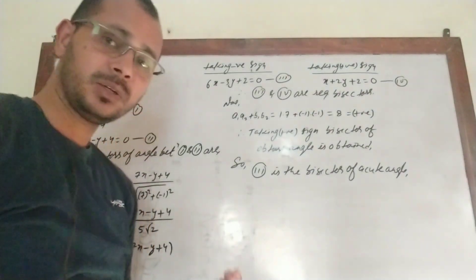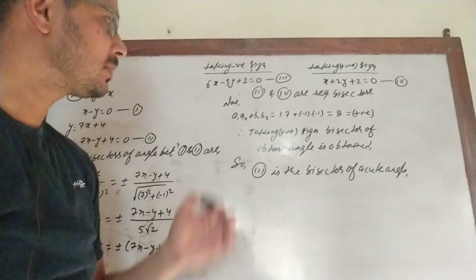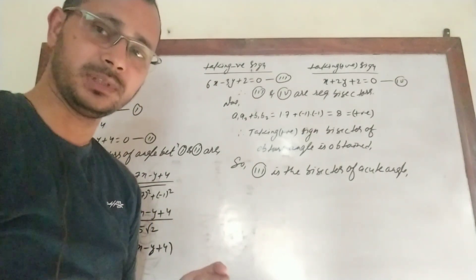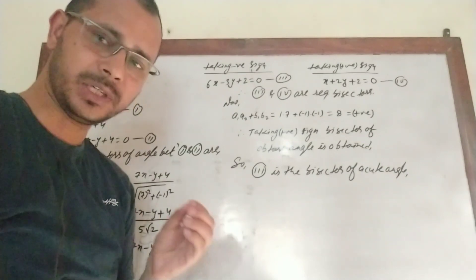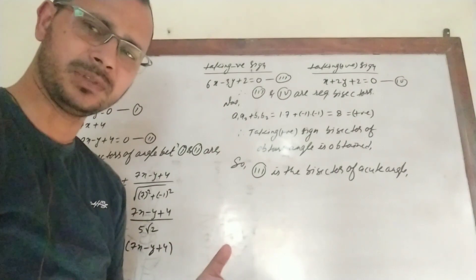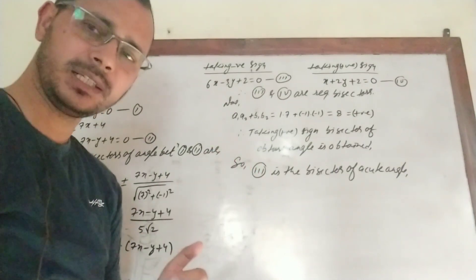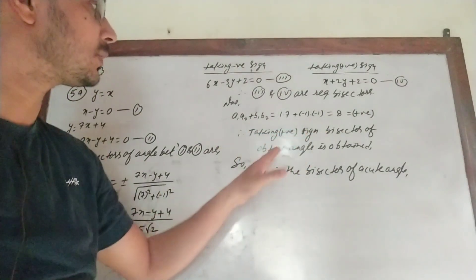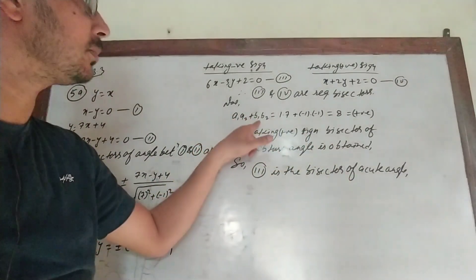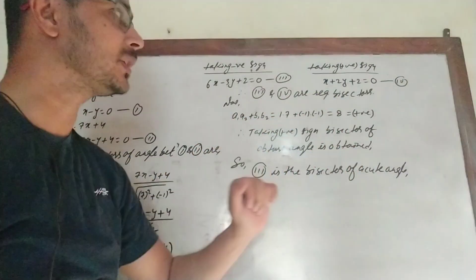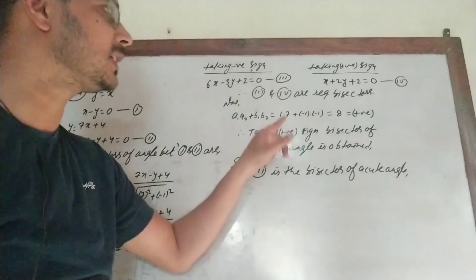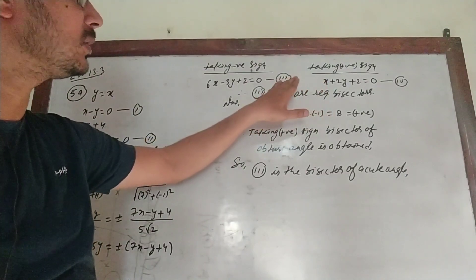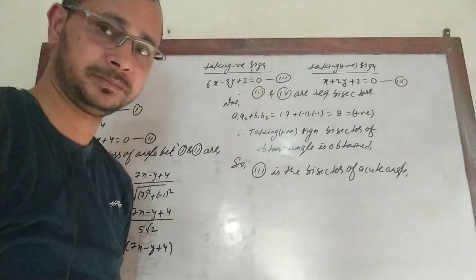Now to determine which is the bisector of the acute angle: if a1·a2 + b1·b2 is negative, the bisector obtained by taking the negative sign is the bisector of the obtuse angle. Here a1·a2 + b1·b2 = 1×7 + (−1)×(−1) = 8, which is positive. So taking the negative sign gives the obtuse angle bisector (equation 3: 6x − 3y + 2 = 0). Therefore equation 4 (x + 2y + 2 = 0) is the bisector of the acute angle.